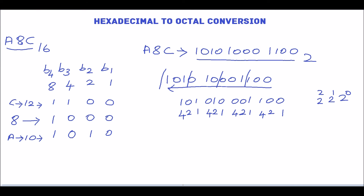Now we multiply each digit with its corresponding weight. In the third group, the second bit is 1, so 1 into 2 equals 2. In the fourth group, the first bit is 1 (1 into 1 = 1), second bit is 0, and third bit is 1 (1 into 4 = 4). So the octal digits are 5, 2, 1, 4.